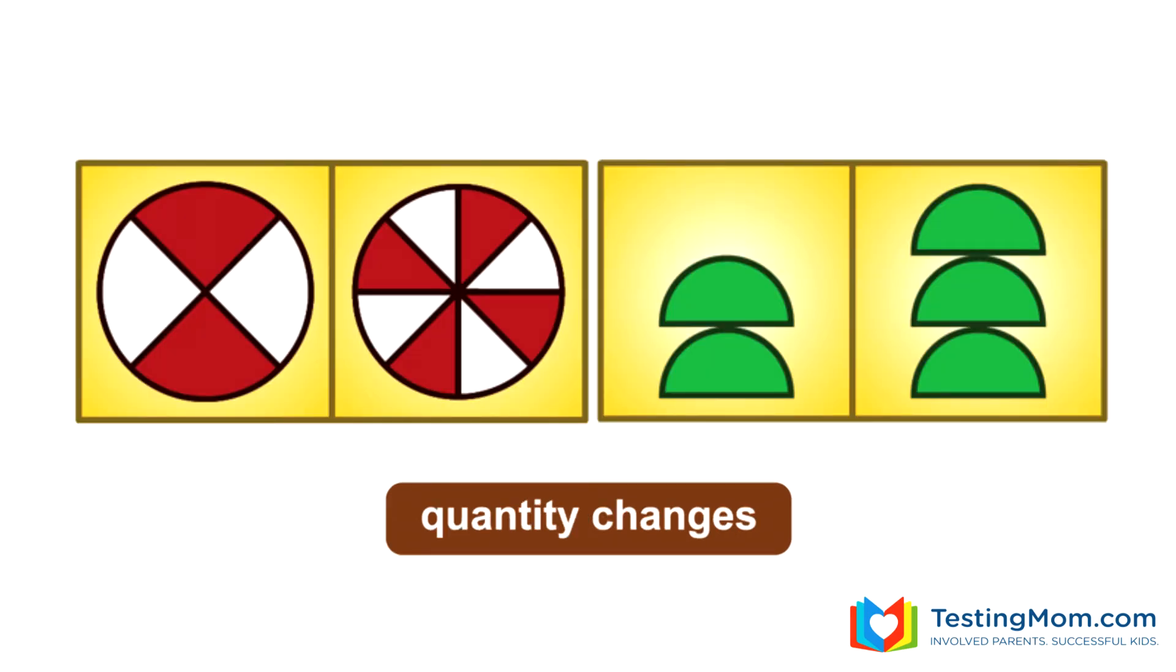The next rule is the quantity change rule. Here you can see two different examples of quantity changes from left to right. On the left side, two maroon segments are added or the number of colored segments doubles. On the right side, one green figure is added.